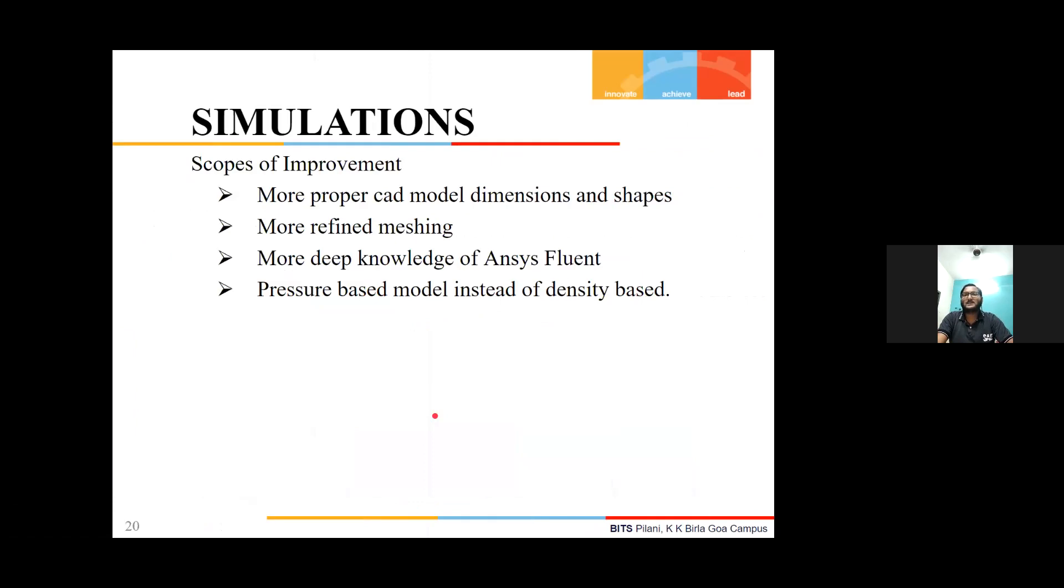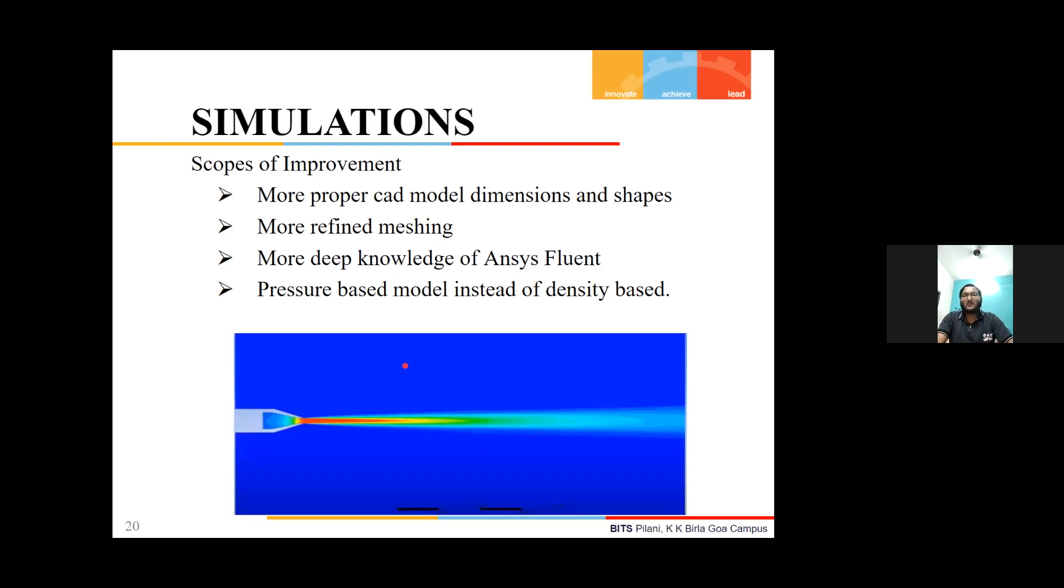Some scope of improvements in the present results: we can make more proper CAD model dimensions and shapes, as it's very significant in getting final results. More refined meshing would result in more precise results. Deep knowledge of Ansys Fluent would help us choose a proper model and take proper decisions in the setup. A pressure-based model instead of density-based would have given better results, as density variation is large when Mach number is greater than 0.3.